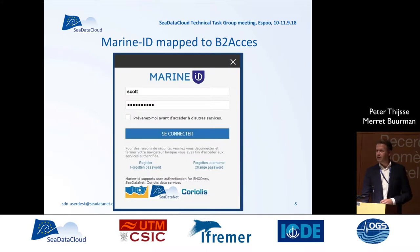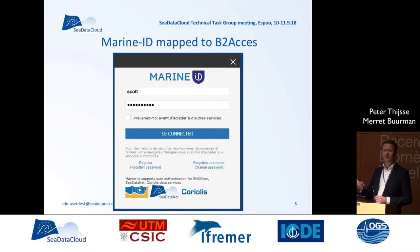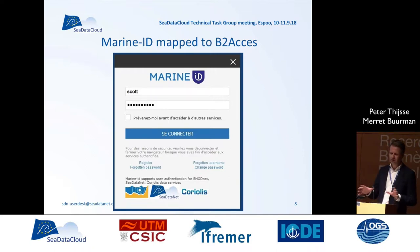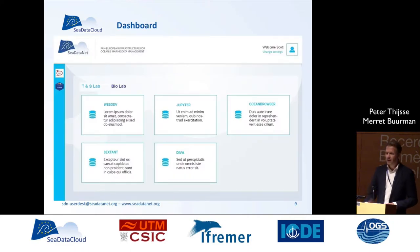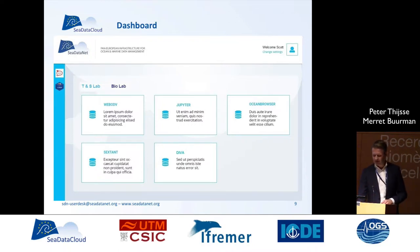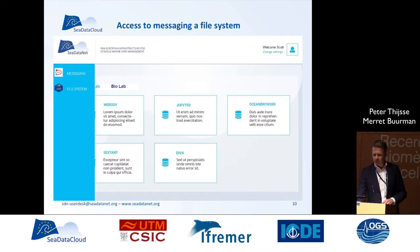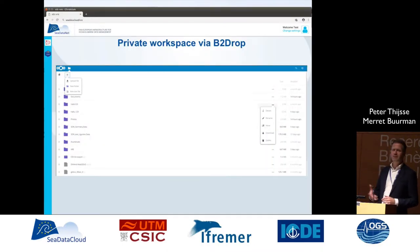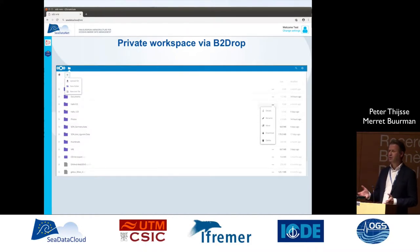Just some highlights about where we are. We connected MarineID to B2Access, so that means you can log in with your MarineID but underneath it's all controlled by B2Access - as a user you won't notice. Then you end up with the dashboard. This is where we are now, in the integration phase. You get a dashboard with different tools that are available and you can access them. Every input and output you find back in your private workspace. If you have used OwnCloud before, it will look very similar to that.